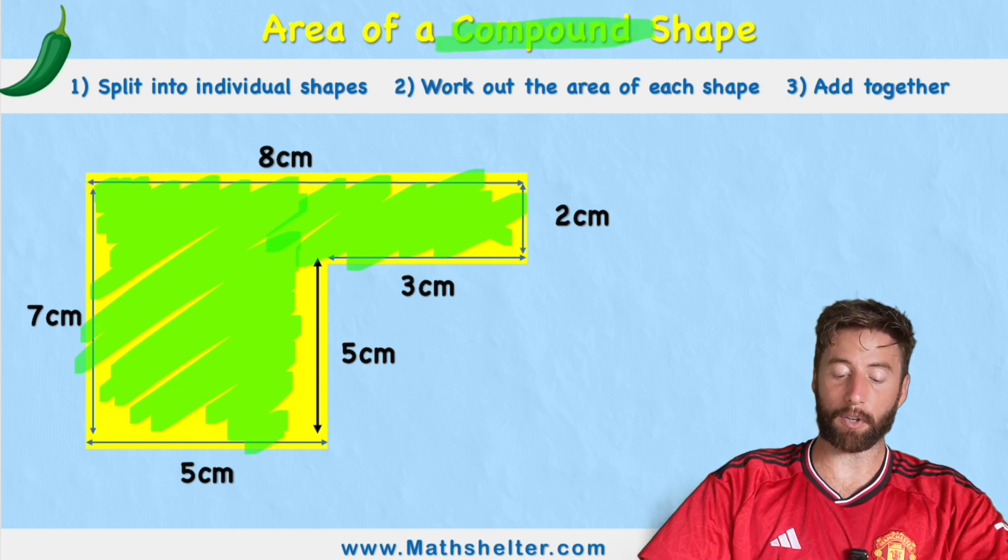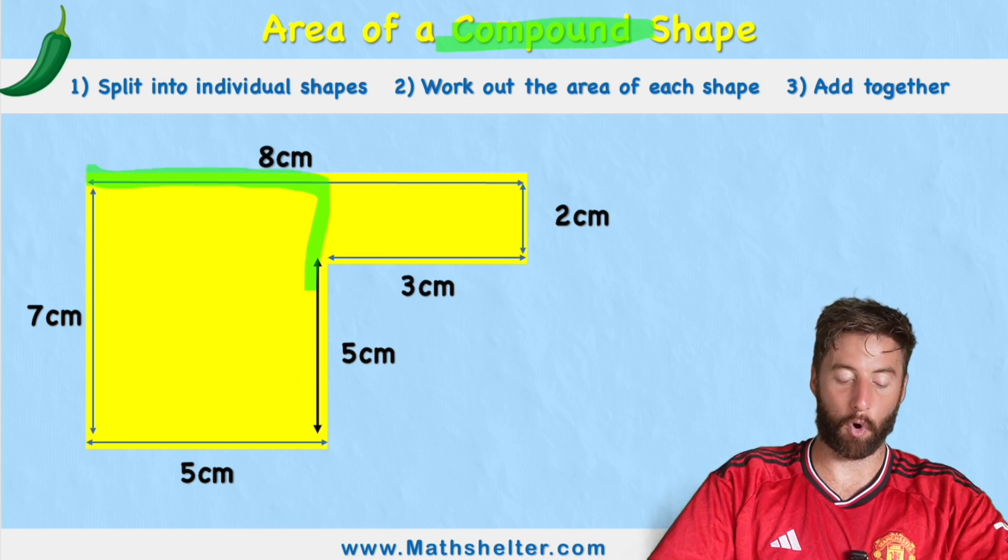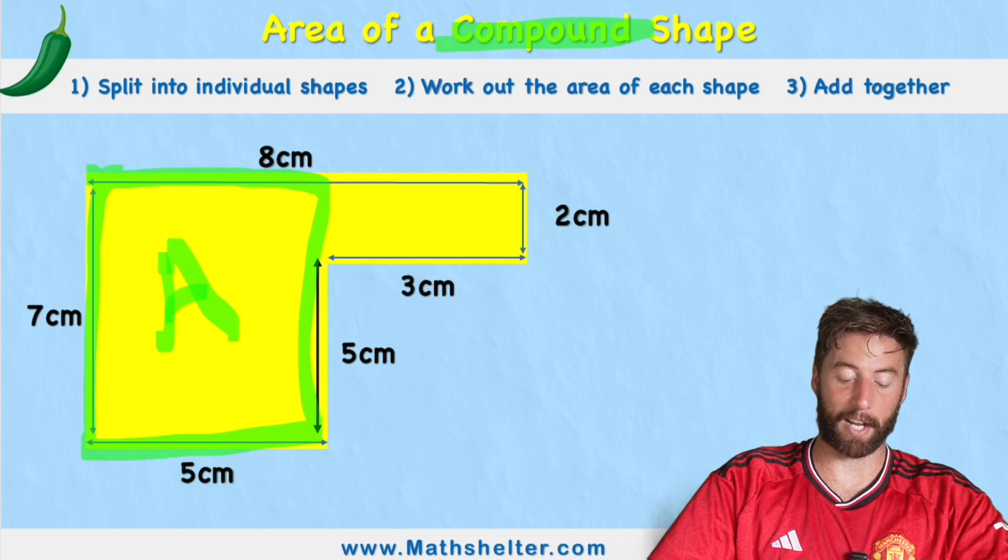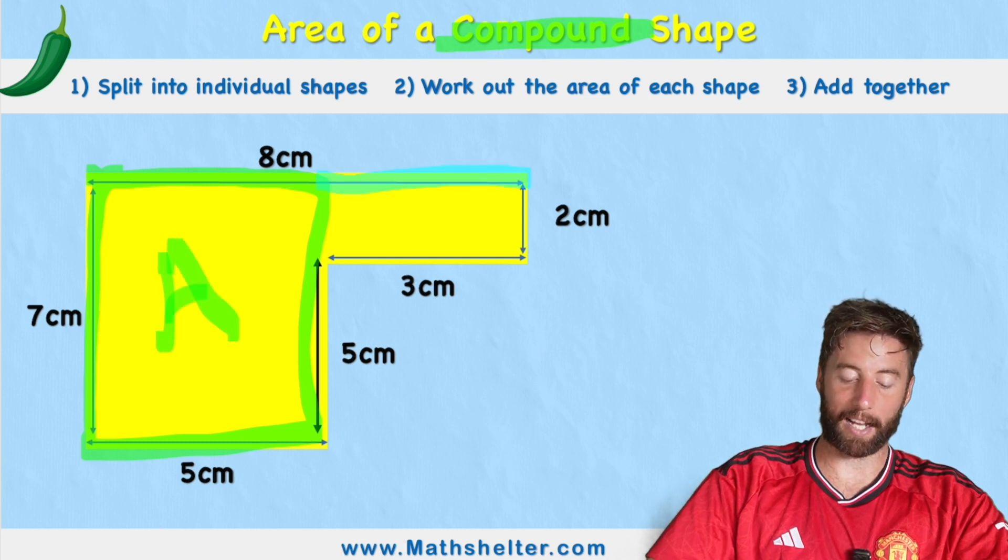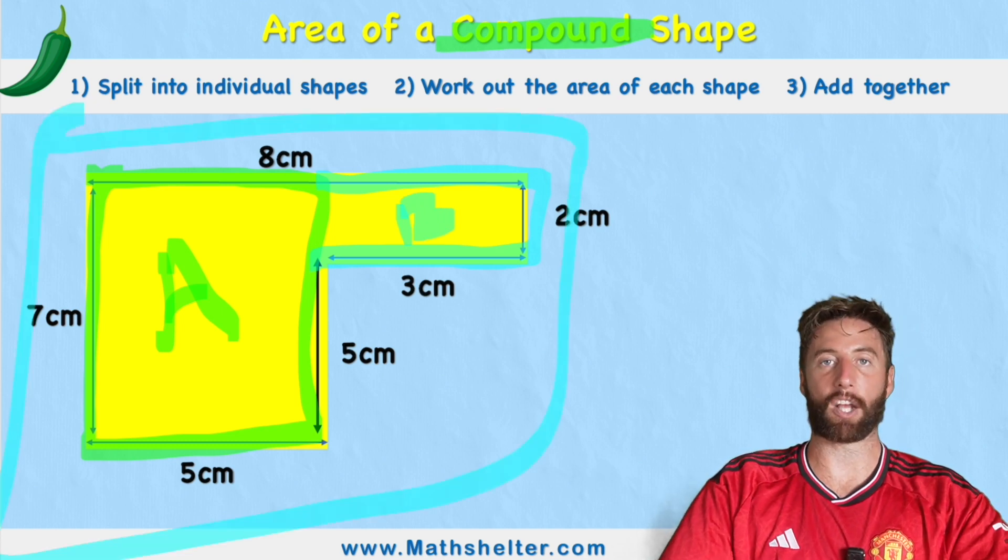And what's a compound shape? Well, a compound shape is shapes that are put together forming an irregular shape. So we can see here we had an original rectangle, let's call that A, and next to it we had another rectangle, let's call that B, and together they create a compound shape.